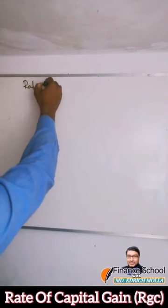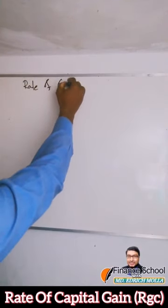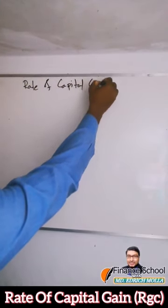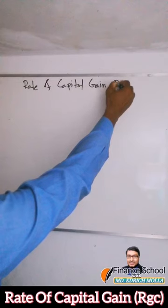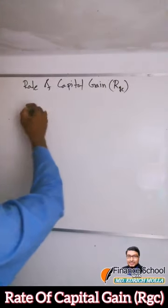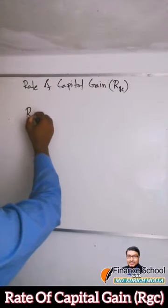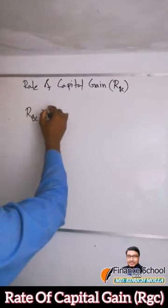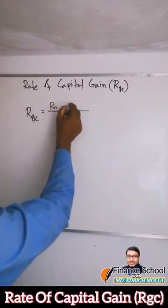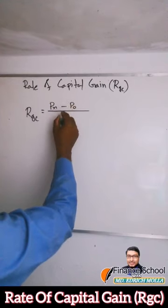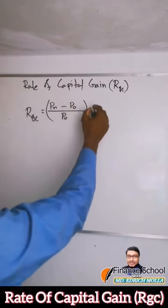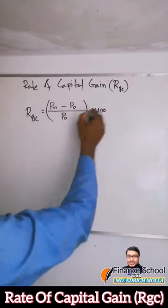This short is all about the formula for Rate of Capital Gain, or RGC. We have to write RGC equal to PN minus P0, divided by P0, multiplied by 100.